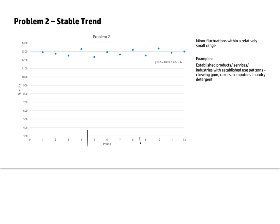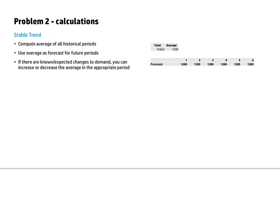Then it kind of comes back to where it traditionally has been — so that's a stable trend. This one is very easy: we just take the average of our 12 periods, as we did in cyclical demand, but in this case we just drop that average value into our forecast. If you suspect something might change, you could adjust upward or downward, but a pretty safe forecast is just to repeat the average value going forward, and you should be within some relatively minor variance of the actuals.